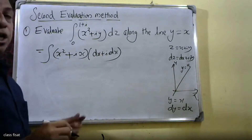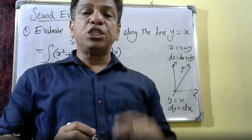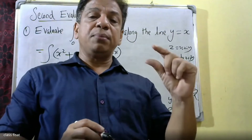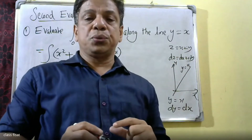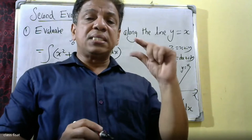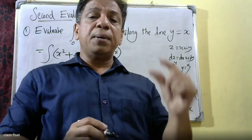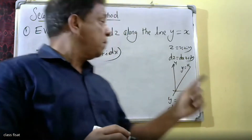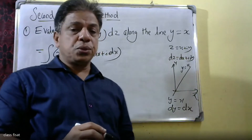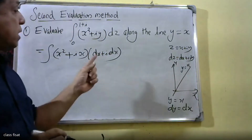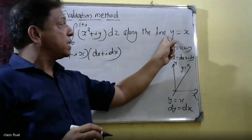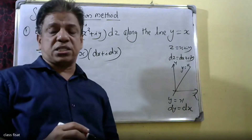We will substitute the variable: z equals x plus iy, so dz equals dx plus i dy. Along the line y is equal to x, we apply the substitution.